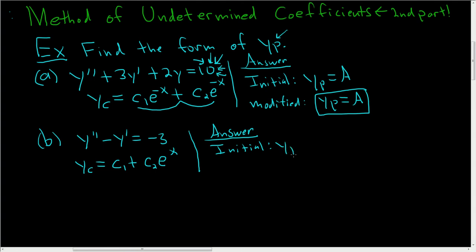So first let's look at the initial. When you're making your initial guess, you only look here. In this case, our initial guess is a, because we have a constant here. 3 is a number. It's a constant.